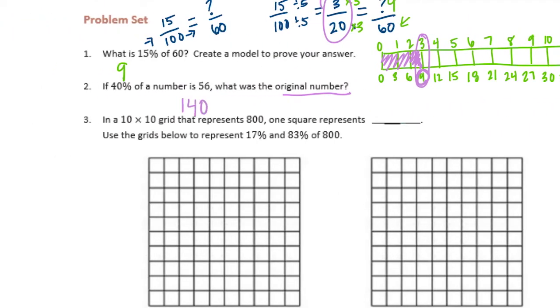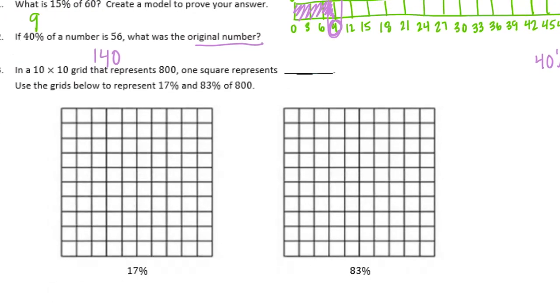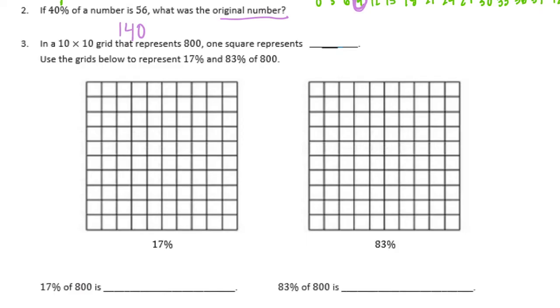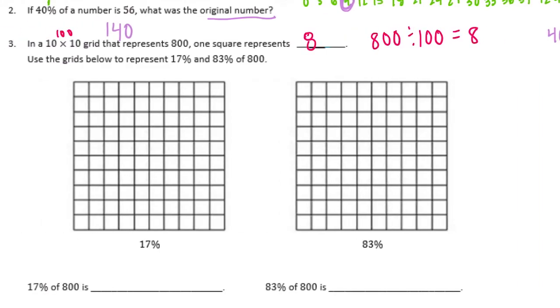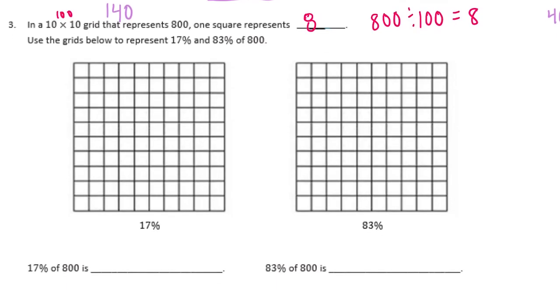That one doesn't say we need to draw a model, so I'm just going to stick with that representation. Number 3. In a 10 by 10 grid that represents 800, one square represents how much? So a 10 by 10 grid is 100 squares. So when there are 100 little pieces and the whole thing is 800, we could do 800 divided by 100, which equals 8. So each square is equal to 8.